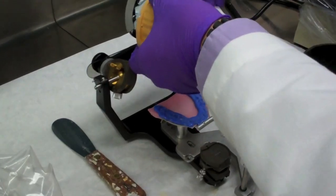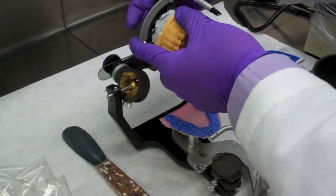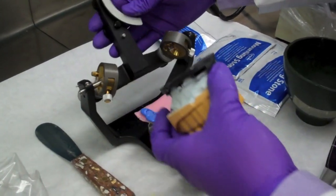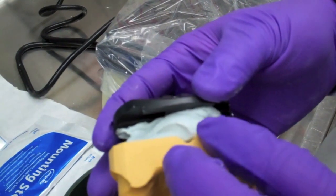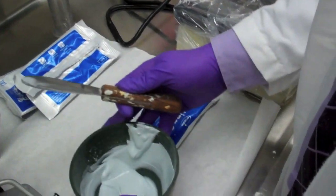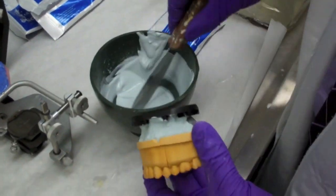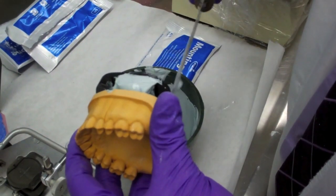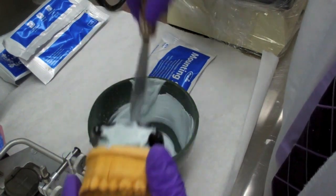We now must fill the voids left from the first step. We disconnect the maxillary from the articulator. Repeating the last steps, we mix another batch of stone. We then take the stone and fill in the voids between the plate and the model.